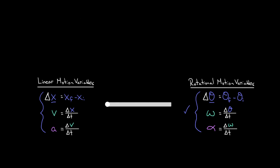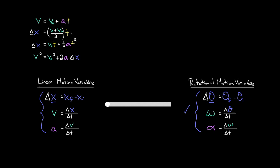Let's write those down. First we'll write down the linear motion kinematic formulas. These are the four kinematic formulas that relate the linear motion variables. Remember, these equations only work if the acceleration is constant — but when it is, these four formulas are a convenient way to relate all the linear kinematic variables.